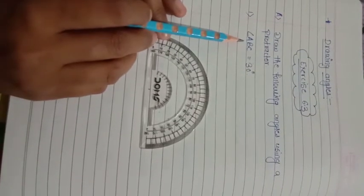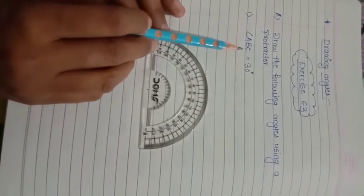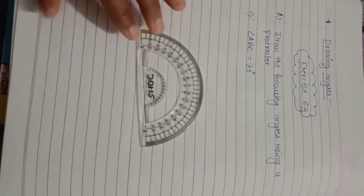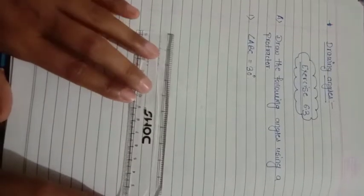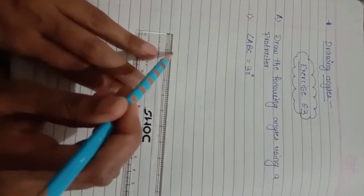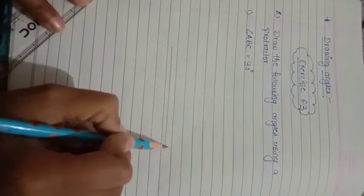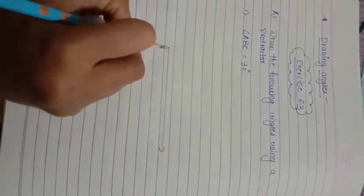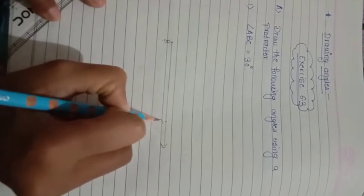Now first we see how to draw angle ABC of 30 degrees using a protractor. First of all, to draw the angle we need to draw the ray using a ruler. Mark this point with B and this point with C.